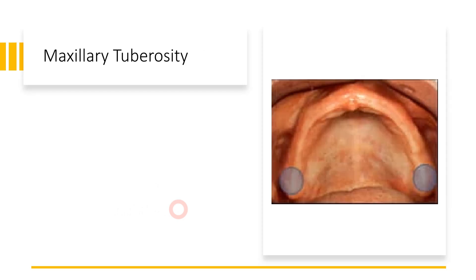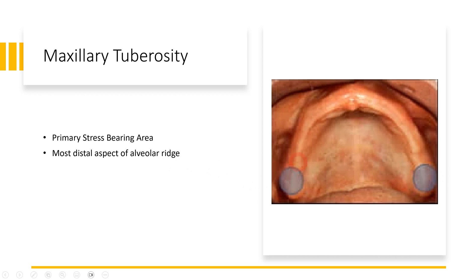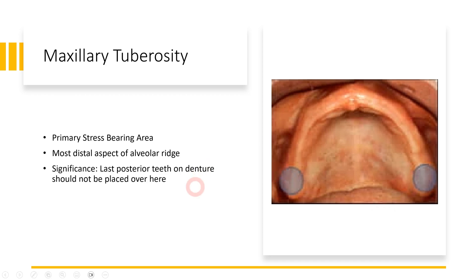Let's first talk about maxillary tuberosity. In this clinical picture you can appreciate an edentulous ridge of a patient showing the maxilla. You can see these round bony projections just posterior to the maxillary third molar — these are called maxillary tuberosity. These are the primary stress bearing areas and they are present just distal to the alveolar ridge, as you can appreciate in this clinical picture. Teeth should not be placed over the maxillary tuberosity because this will lead to the patient not being able to close their mouth.